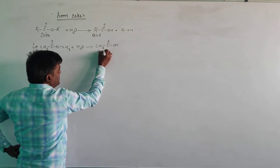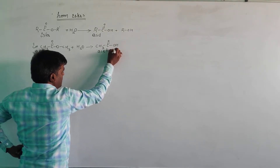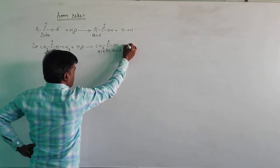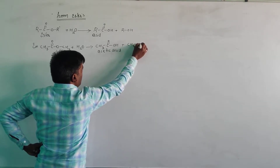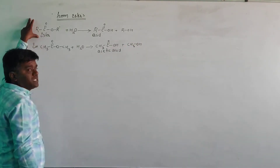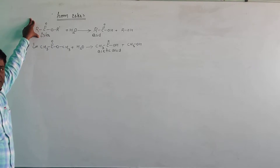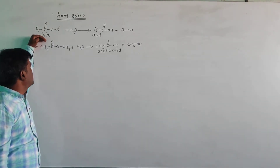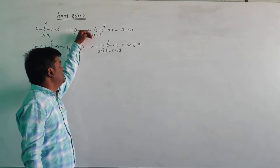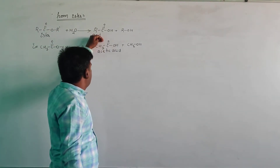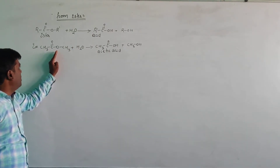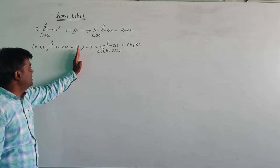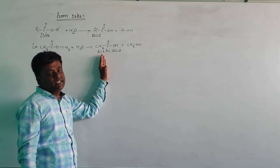For example, methyl acetate undergoes hydrolysis to produce acetic acid, and the byproduct is alcohol, that is methyl alcohol. When esters are hydrolyzed, they produce carboxylic acid.